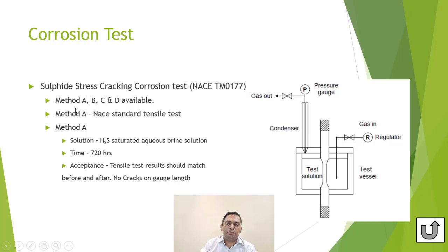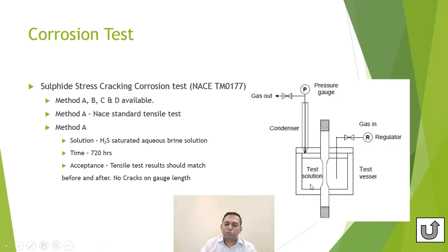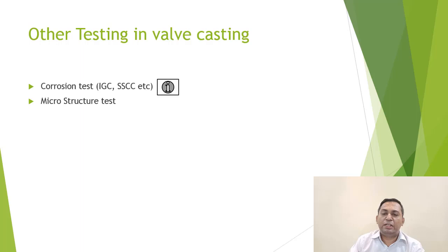Third is sulfide stress cracking corrosion test as per NACE TM0177. There are four methods A, B, C, D. Method A is the NACE tensile test: the sample is placed in H₂S-saturated aqueous brine solution for up to 720 hours; tensile test results before and after should match and there should be no crack on the gauge length. The sample is under tension with H₂S saturated gas passing through brine solution — under these conditions it should not crack and both before/after results should match.